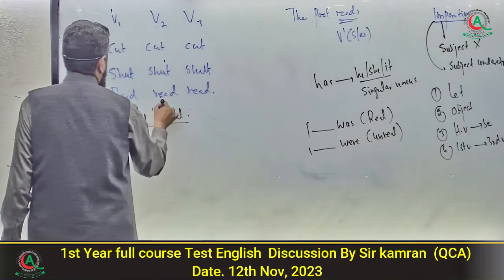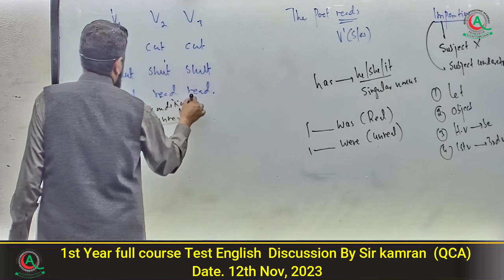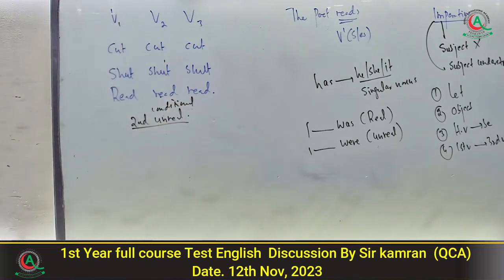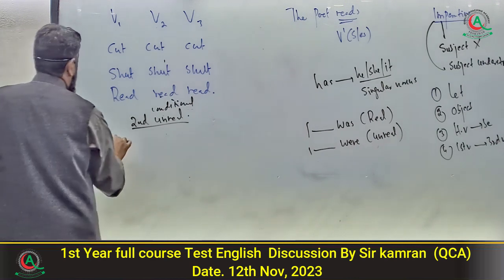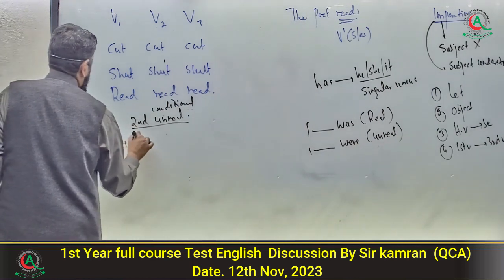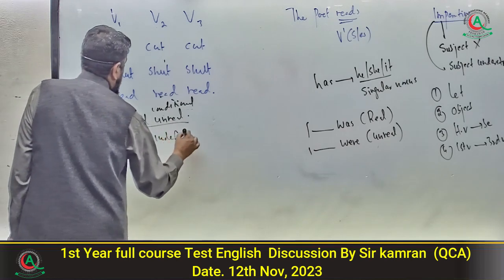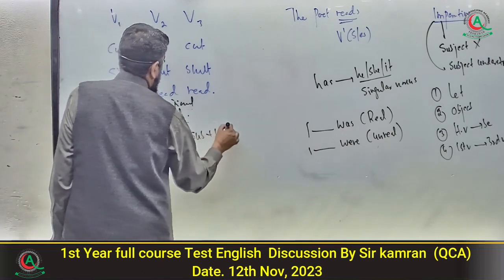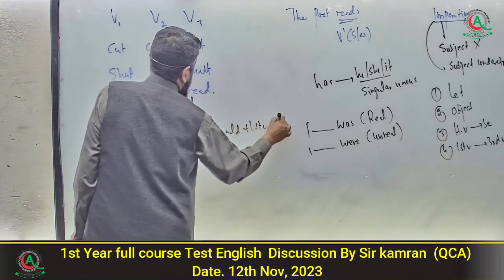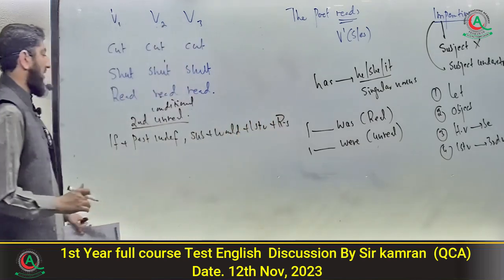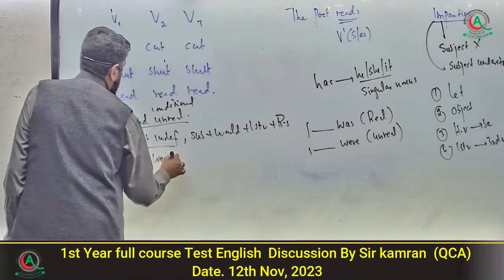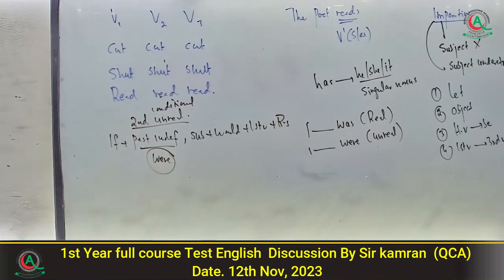Second conditional کا structure اور formula: If + past indefinite + subject + would + first verb + rest of sentence۔ Past indefinite میں آپ کے پاس ہمیشہ 'were' ہوگا، 'was' نہیں — چاہے subject کوئی بھی ہو۔ Option number C is the correct one۔